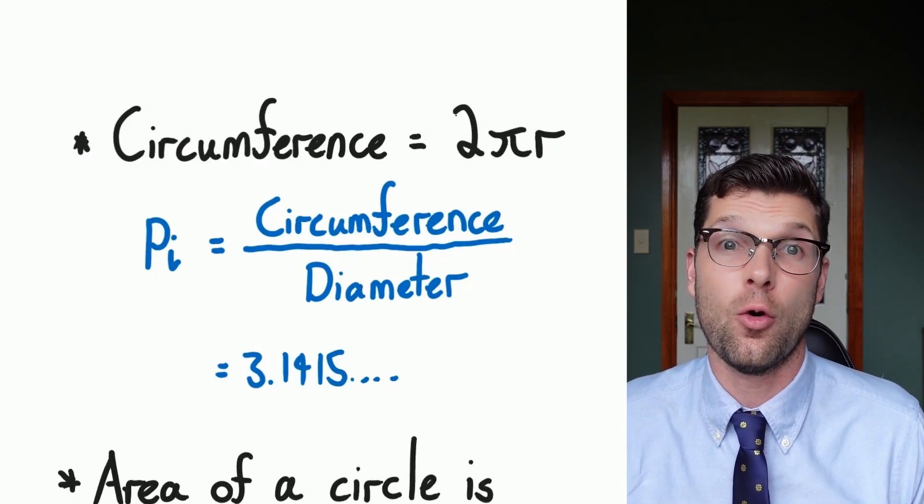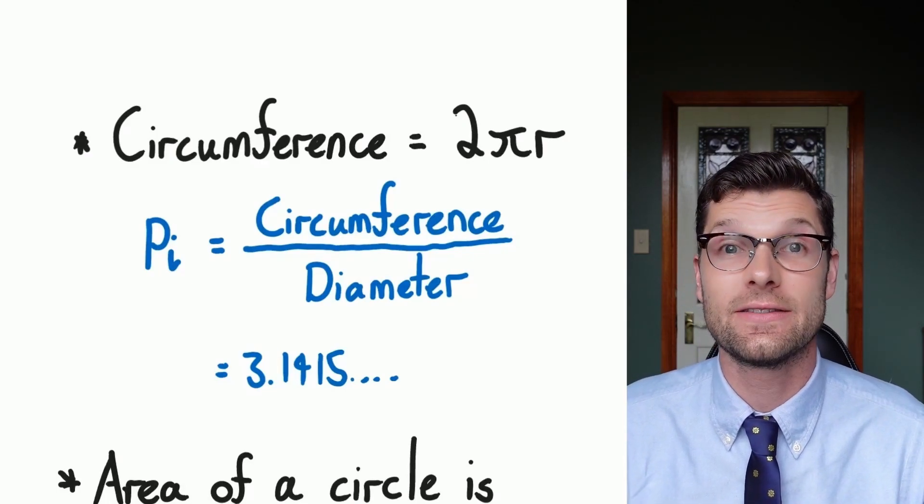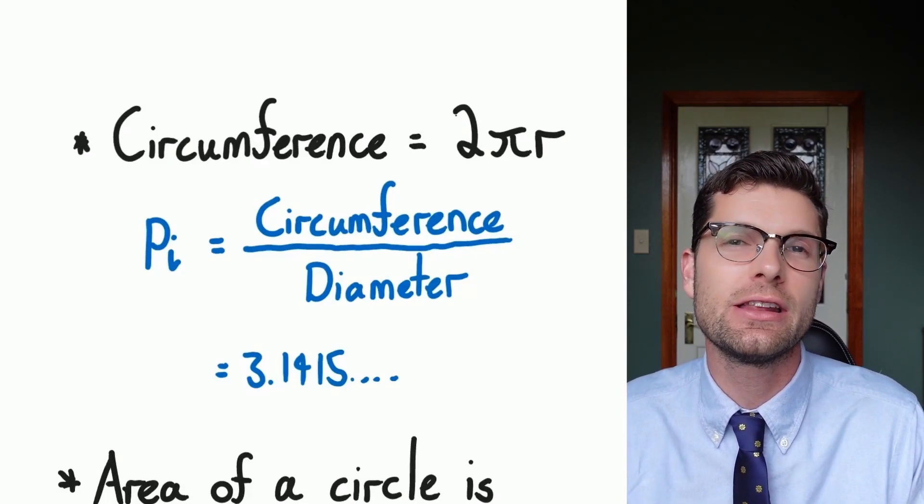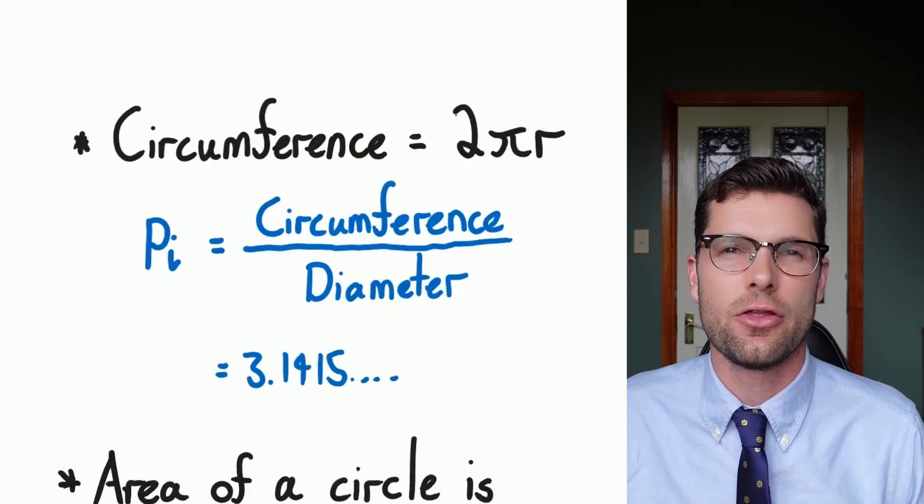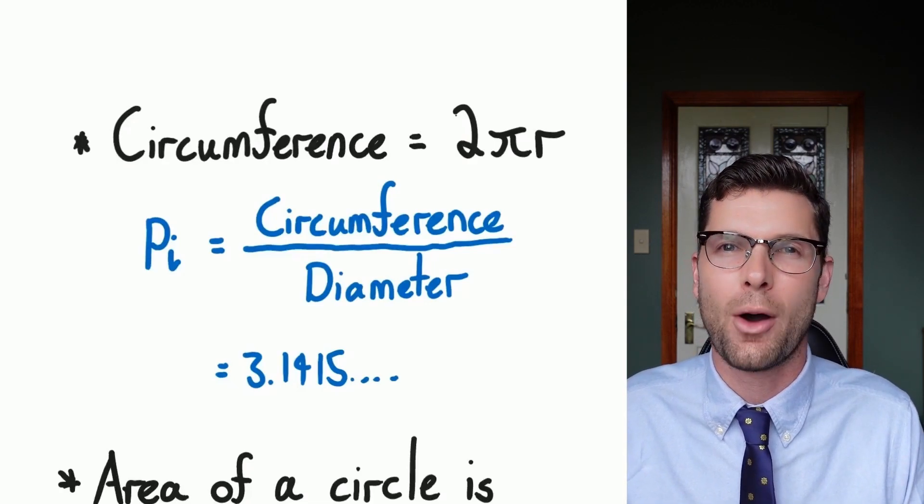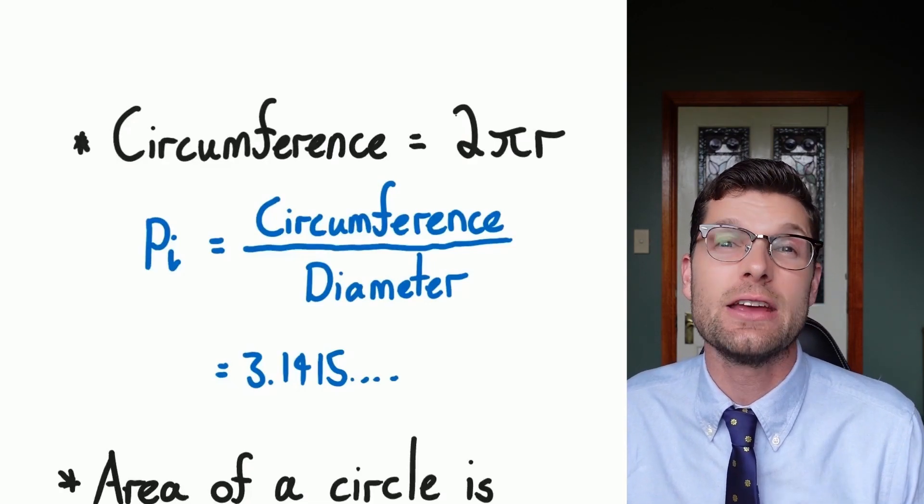So one thing that we have looked at before is that the formula for finding the circumference is based on this really important ratio called pi. So it is really important when we look at the circumference we need to know the formula and this is 2πr and that pi is really important.